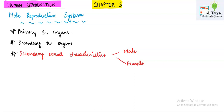Please study these chapters thoroughly because this chapter from unit one is going to cover a lot of marks in the board examination. So before starting with gametogenesis, let's understand the structure of the male reproductive system. Prior to that, some more terms are there which are generally asked by examiners in board examinations.